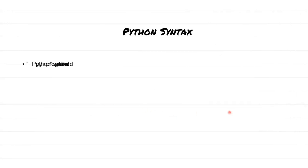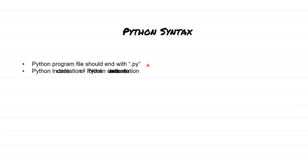Now moving on to Python syntax. Some Python syntax we have already seen: Python program files should end with the .py extension. Whenever you write a Python program, you need to save that file with the .py extension. In Python we also have something called Python indentation. Python indentation makes your code very simple, easy to read, and easy to understand. It basically signifies that a certain section is a block of code, and using indentation we isolate one block of code from another.